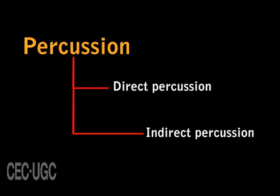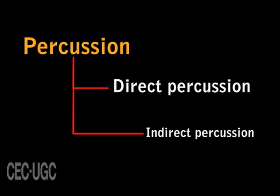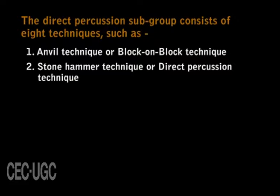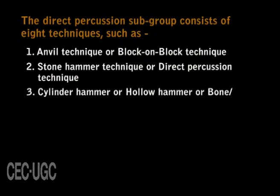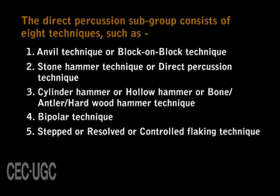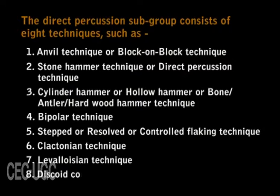The percussion group has two subgroups, namely direct percussion and indirect percussion. The direct percussion subgroup consists of techniques such as anvil or block-on-block technique, stone hammer or direct percussion technique, cylinder hammer or soft hammer using bone, antler, or hardwood, bipolar technique, step or reserve or control flaking technique, Clactonian technique, Levallois technique, and discoid core or Mousterian technique.